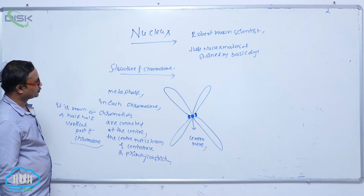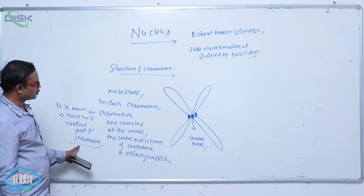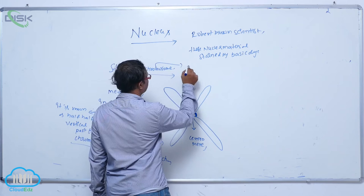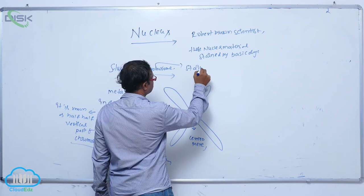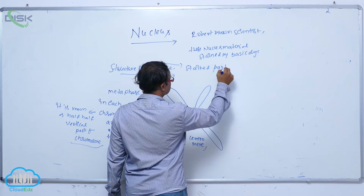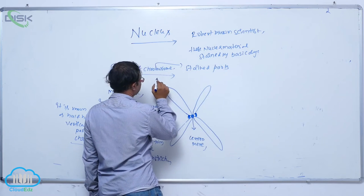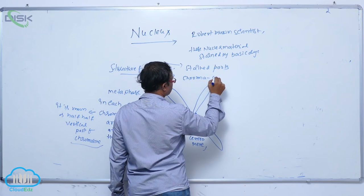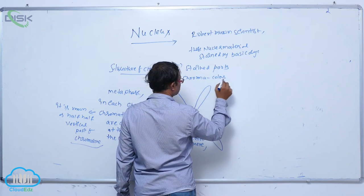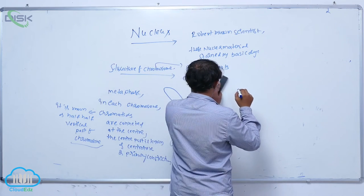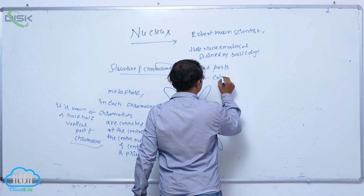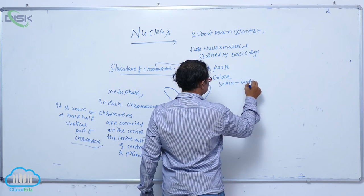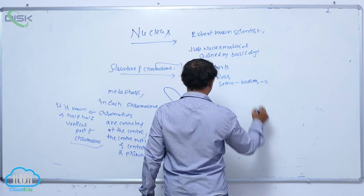Chromosomes are generally stained parts. The word chromosome comes from Latin: chroma means color, and soma means bodies. So chromosomes are known as color bodies.